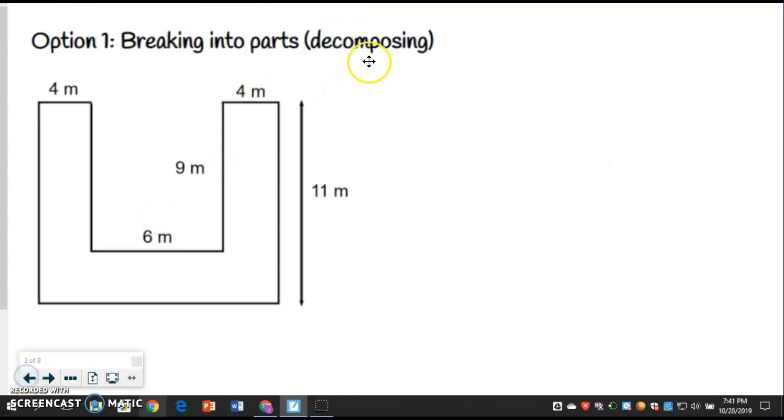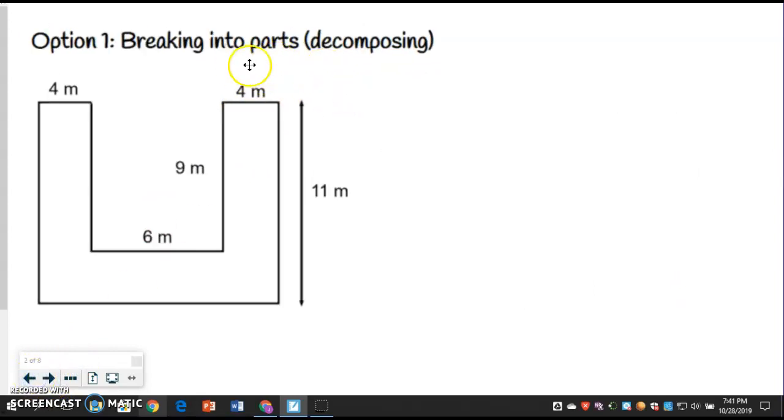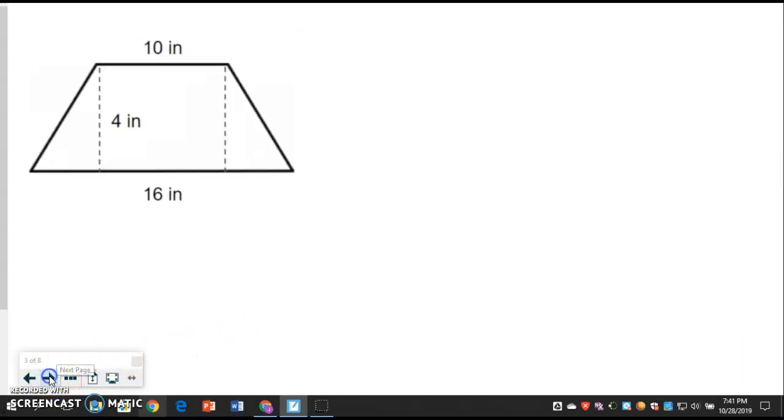And that was what we got before. So both ways work. This was called composing. This last one was decomposing. We still got the same answer either way. You're just either breaking the shape down into pieces and adding them up, or you're kind of adding onto the piece and taking away what you don't need. Now you can't always do composing depending on the shape. Sometimes it makes it a little more complicated, but this one happened to work out. It's kind of just however your brain works.